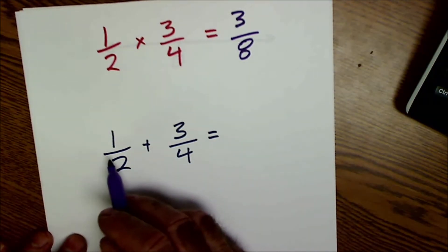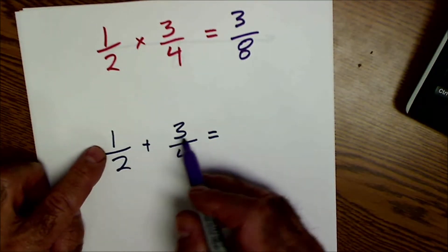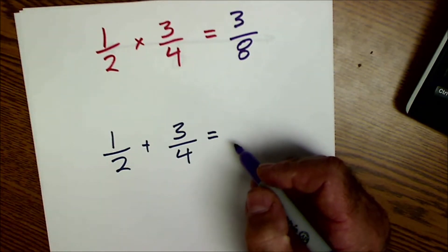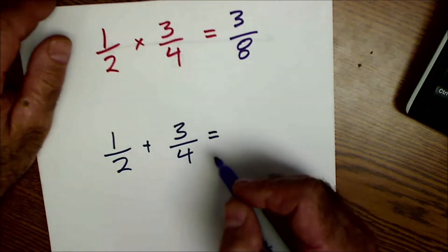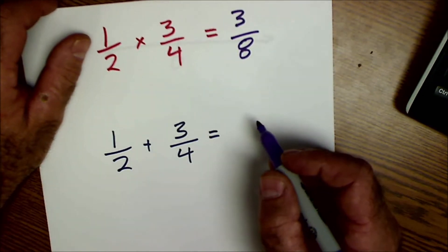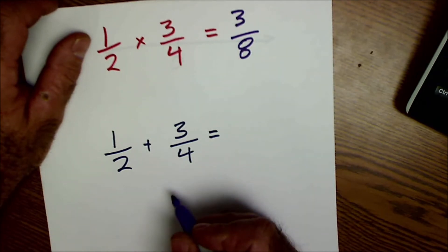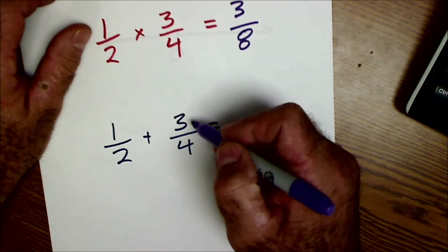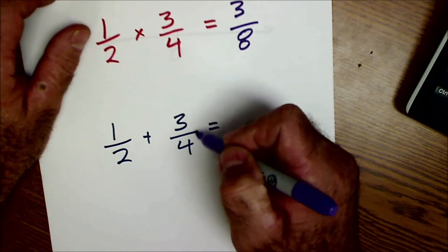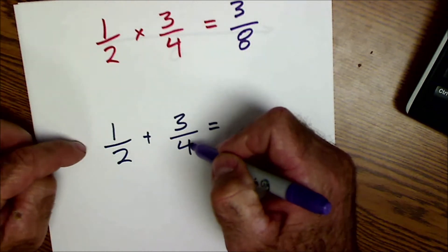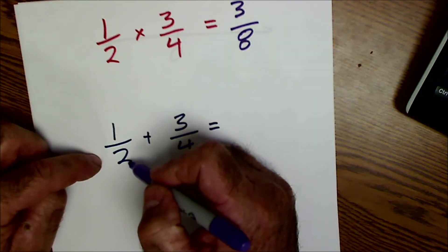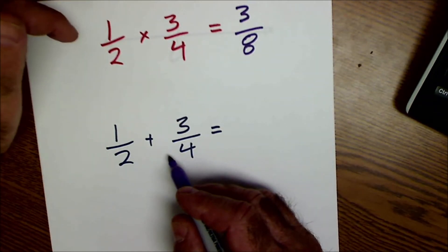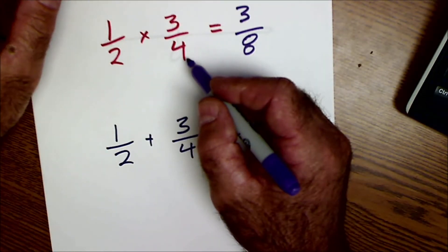But if I try to add by going across the top — one plus three is four, two plus four is six — I get four sixths or two thirds, and that is incorrect. The reason is order of operations: multiplication or division comes before addition and subtraction. A fraction really is a division problem, so you're dividing one by two and three by four, and that division has to be taken into account. That's why adding and subtracting fractions is harder than multiplying and dividing them.